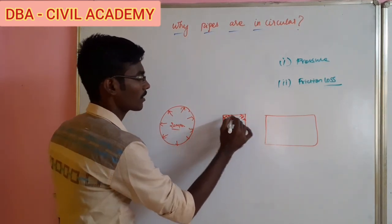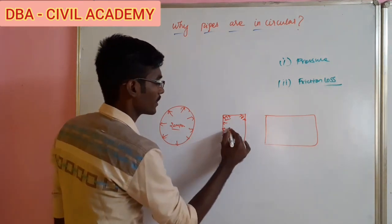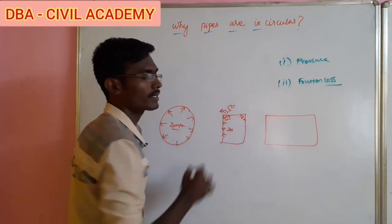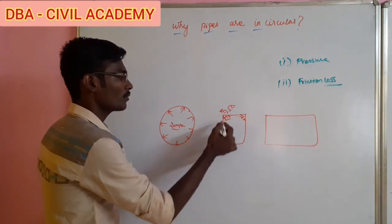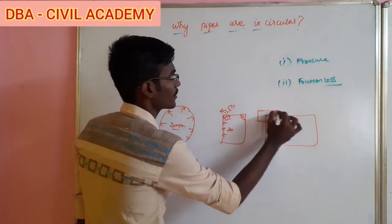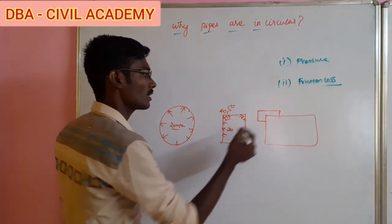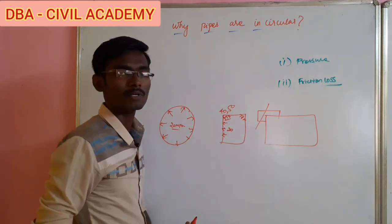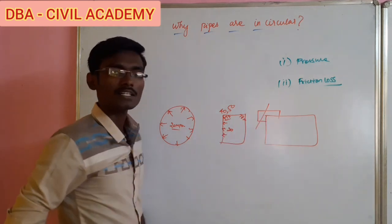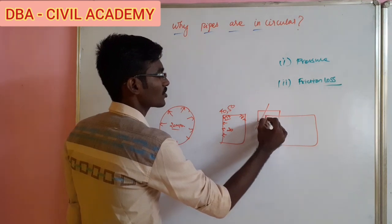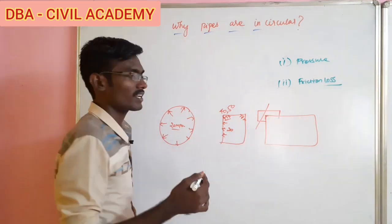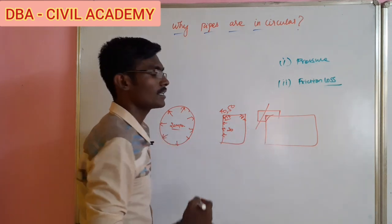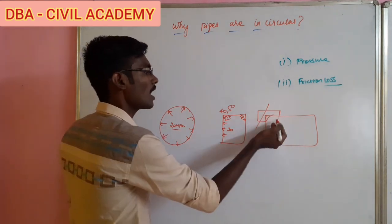When compared to the sides, the pressure concentrates at the corners. For example, if the sides are 20, the corner stress may be 40 or 50. In that case, we have to provide extra materials as well to handle that stress. But if we have a smooth curved surface, we can reduce that pressure concentration.